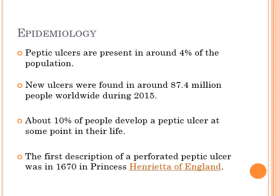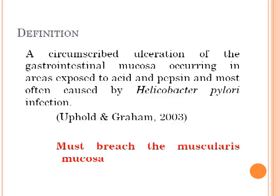The first description of a perforated peptic ulcer was in 1670, in Princess Henry, Tower of England. Now, how do you define the peptic ulcer? By definition, it is a circumscribed ulceration of the gastrointestinal mucosa occurring in areas exposed to acid and pepsin, and most often caused by Helicobacter pylori infection. This definition was put forward by Uphold and Graham in 2003.